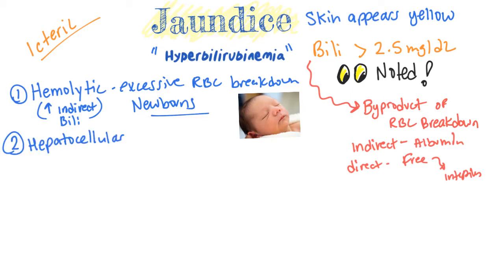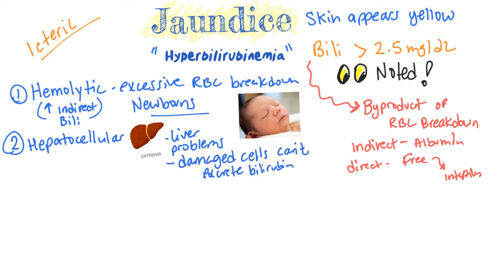The second form of jaundice is hepatocellular. Hepato stands for liver and cellular is cells, so there are damaged cells that can't excrete the bilirubin. In this case, both the indirect and the direct bilirubin will be elevated. If there is liver disease and liver cirrhosis, this is hepatocellular jaundice.